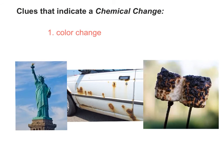Now we're going to complete the clues that indicate we have a chemical change or chemical reaction. The first clue is a color change. When I'm talking about a color change, I mean a drastic color change — not going from blue to a light blue, not fading from the sun. We're talking a drastic color change.